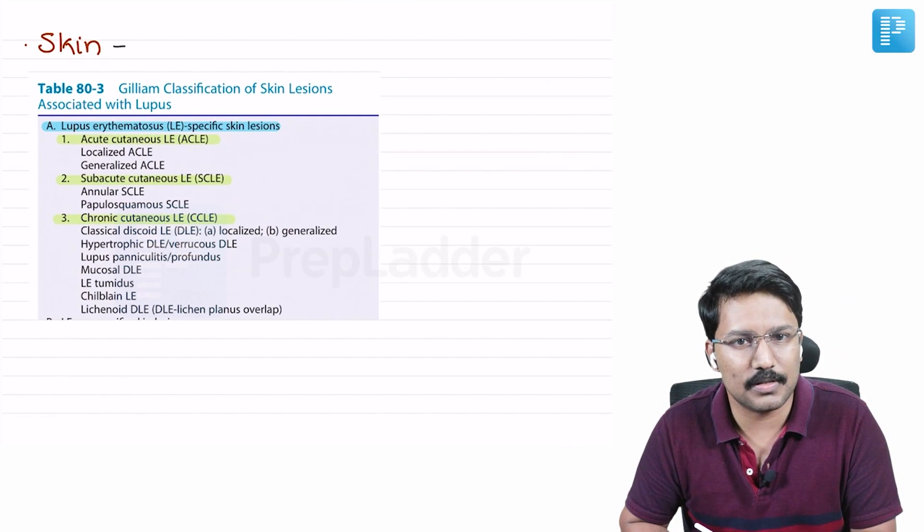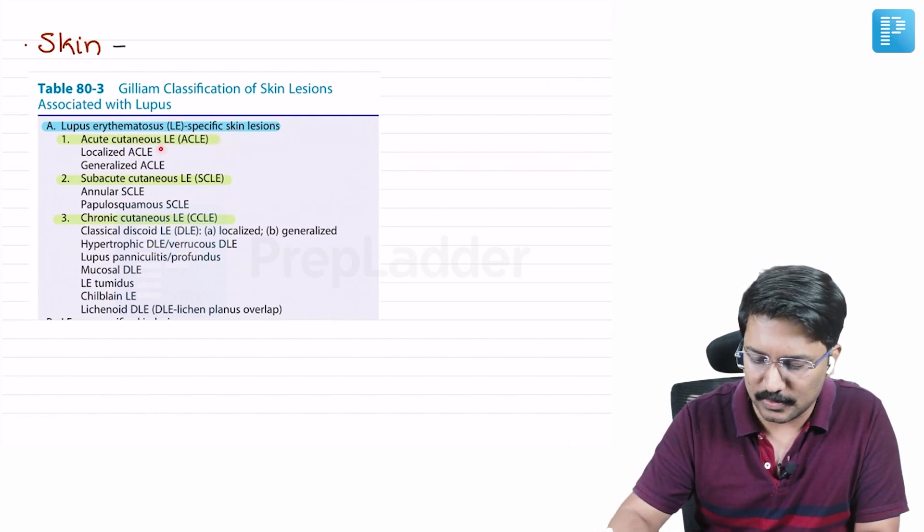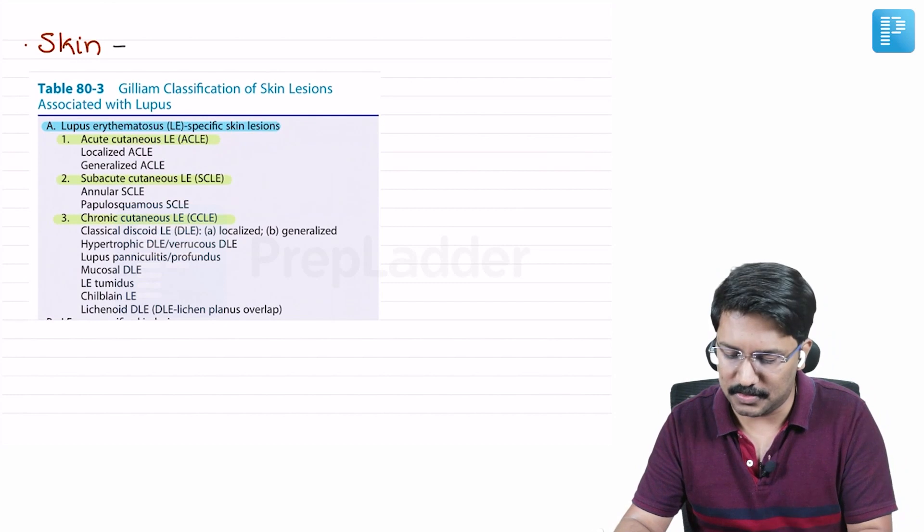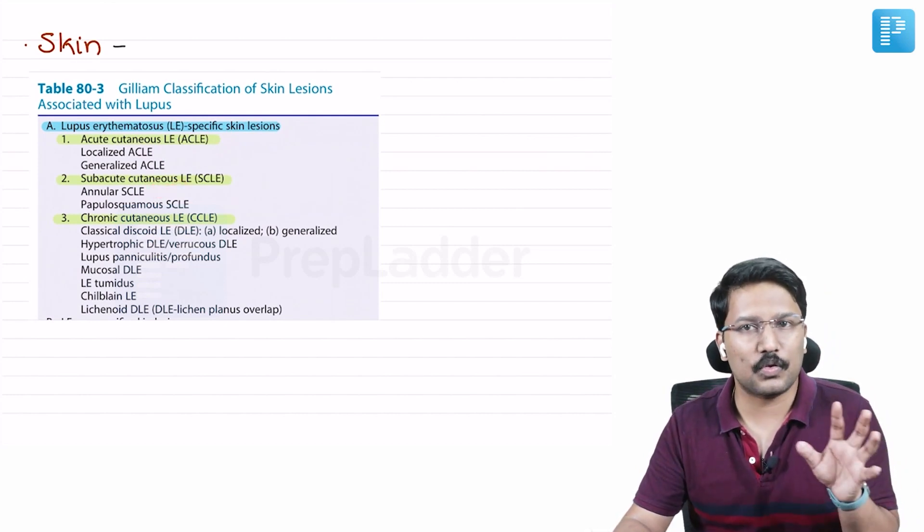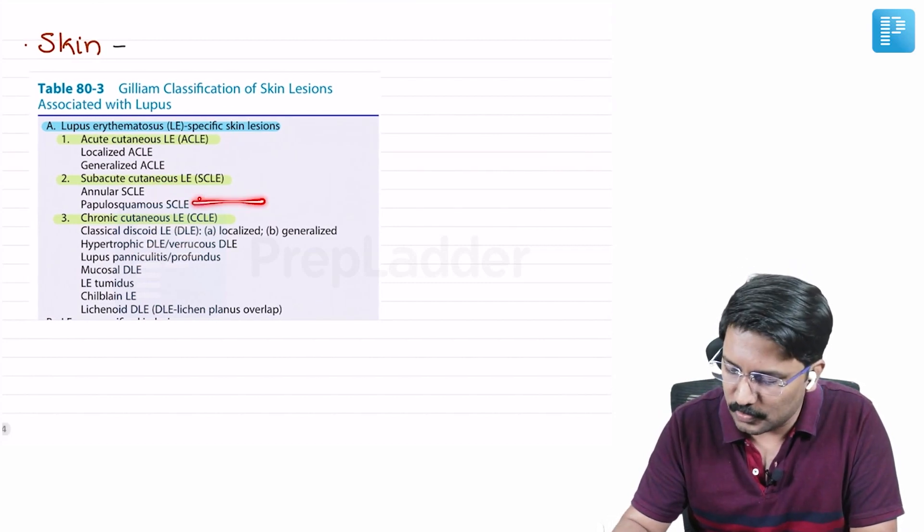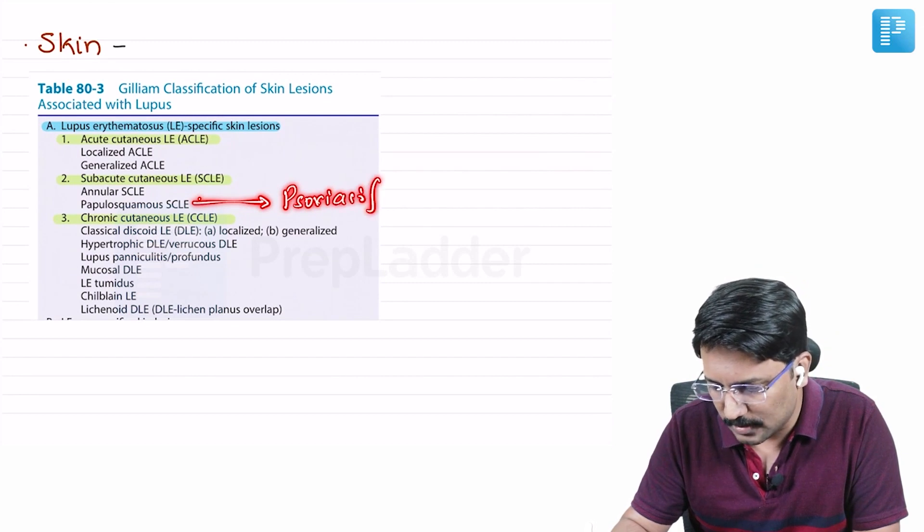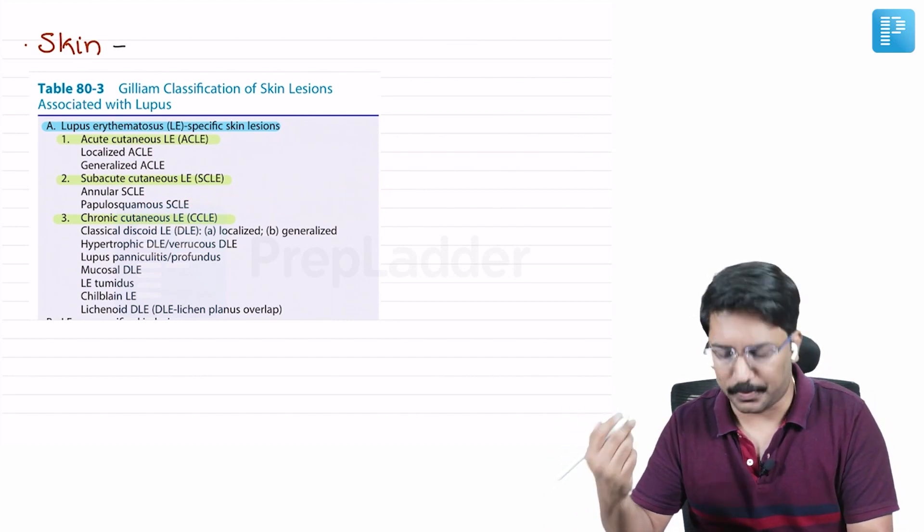Now what are the specific lesions according to this classification? Acute cutaneous lupus erythematosus - there are two specific localized and generalized forms. Then subacute cutaneous lupus erythematosus - again two specific lesions: annular subacute cutaneous lupus erythematosus and papulosquamous subacute cutaneous lupus erythematosus. The papulosquamous is also known as psoriasiform lupus erythematosus, because clinically and histopathologically it resembles psoriasis.